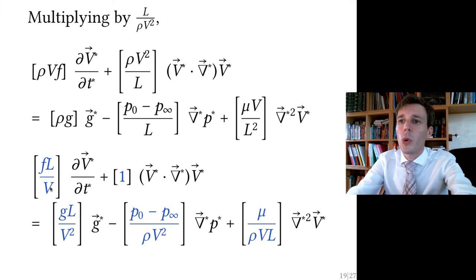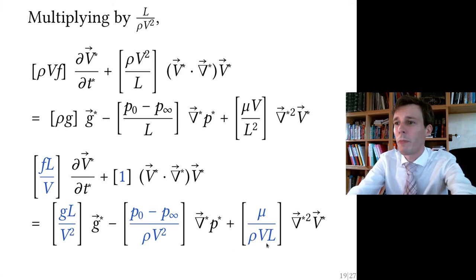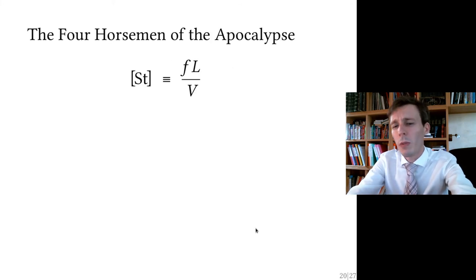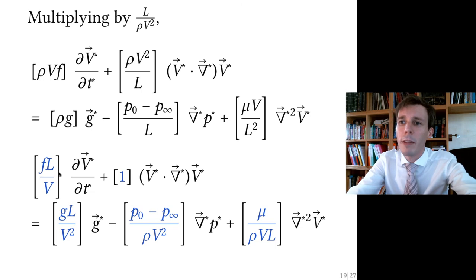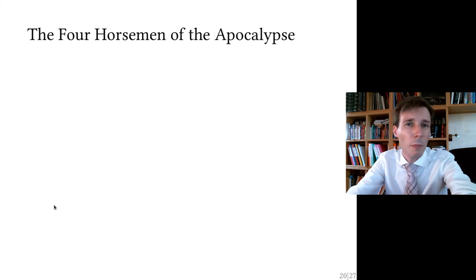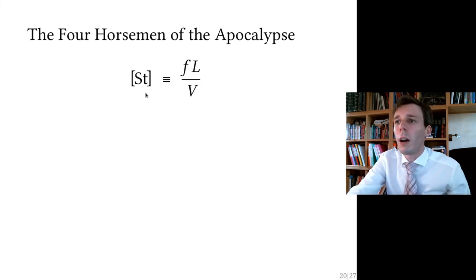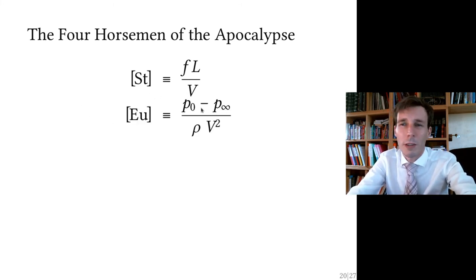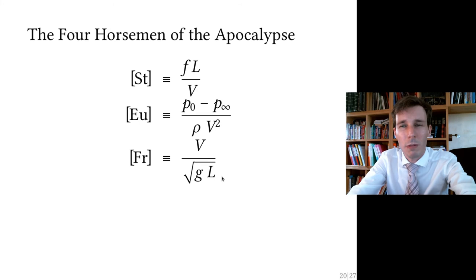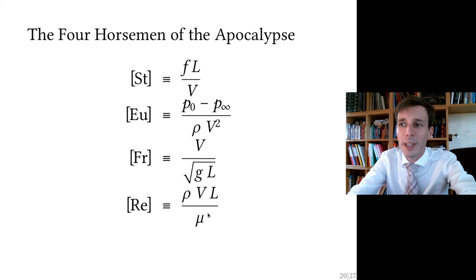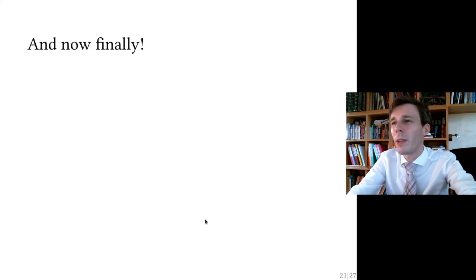We land on this equation, and we give names to those dimensionless groups. By convention and for historical reasons: the Strouhal number is frequency times length divided by velocity; the Euler number is the difference in pressures divided by rho v-squared; the Froude number is velocity divided by the square root of gravity times reference length; and the Reynolds number is rho times v times L divided by mu.